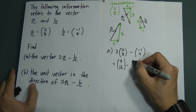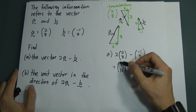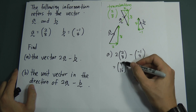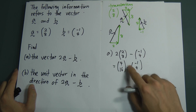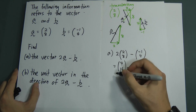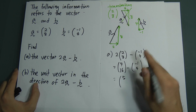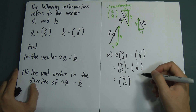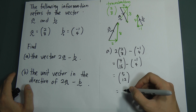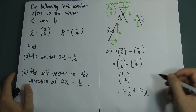Multiply 2 by a to get (4, 16), then subtract b which is (-1, 4). In column vectors, the top value (x-component) can only operate with the top value, and the bottom (y-component) only with the bottom. So 4 minus (-1) = 5, and 16 minus 4 = 12. You can write this as the column vector (5, 12) or equivalently as 5i + 12j — both are correct.